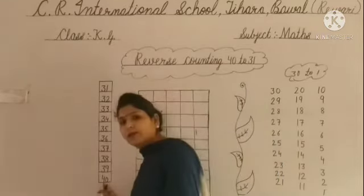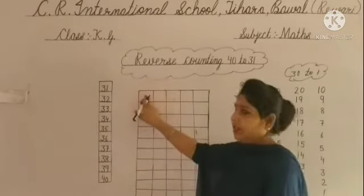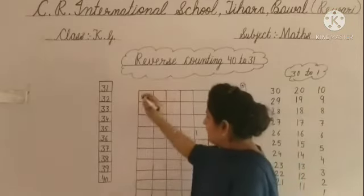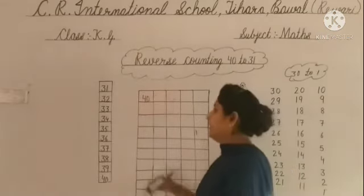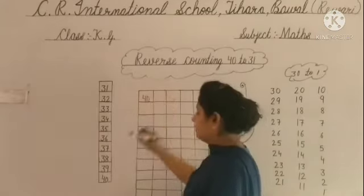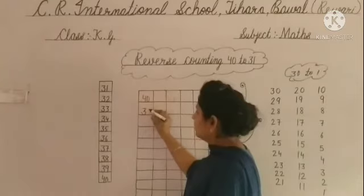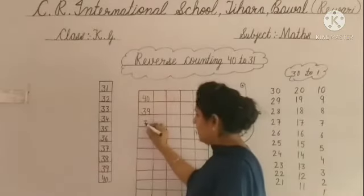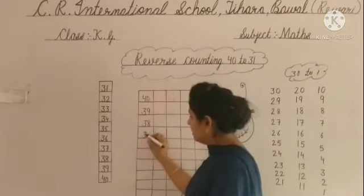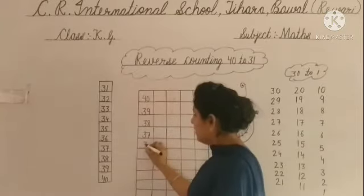कैसे करेंगे? यह 40 ऊपर चला जाएगा. तो हम यहाँ पर लिखेंगे 40. आप देखो, 40 से before क्या होता है? 40 से before पहले क्या है? 39. यहाँ पर लिखेंगे 39. 39 before क्या है? 38. 38 before? 37. 37 before? 36.